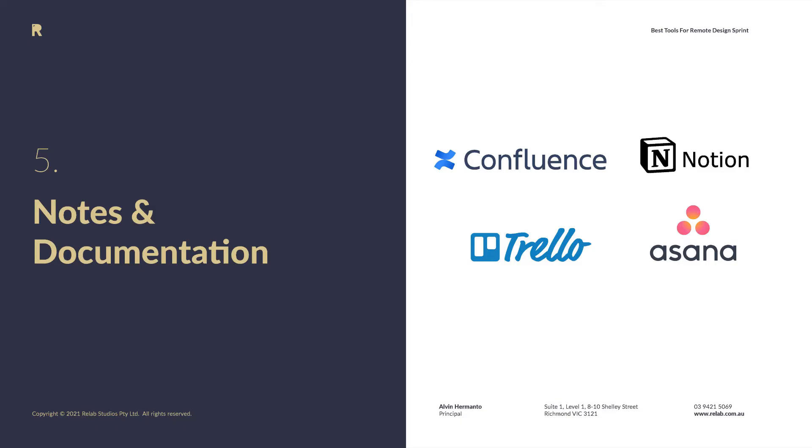Number five is about notes and documentation, which oftentimes gets overlooked. After a design sprint, you need to review the sprint and the outcome. Use Notion, or Confluence if you're already in an Atlassian environment. Trello and Asana work as well. The most important thing is to record user feedback, categorize it as positive, negative, or neutral, and document next steps and decisions. Here we use Confluence because we live in the Atlassian environment with Jira, so we can integrate the whole thing. But Notion is a great one to look at.